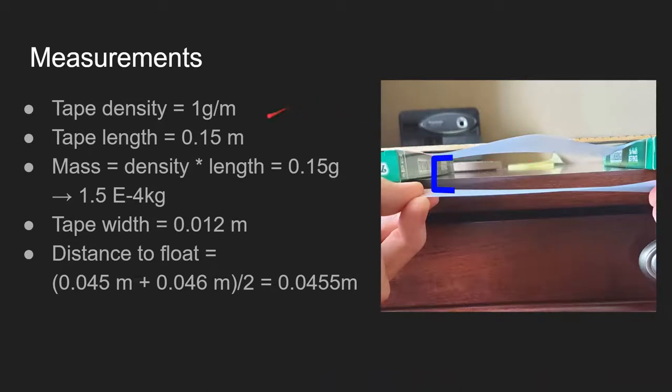Some measurements taken are given here. Density was given. Using density and length, we found the mass. Width was also measured, as was the distance needed between an upper tape and lower tape to get the upper tape to float, which was done as shown here. This was measured twice with two pieces of tape of the same length to get higher accuracy with the average value given here.